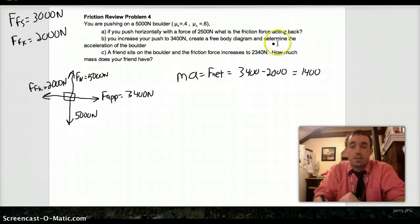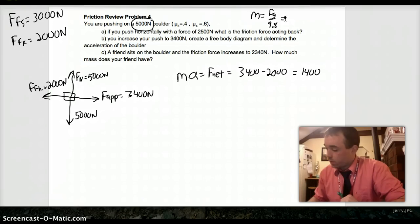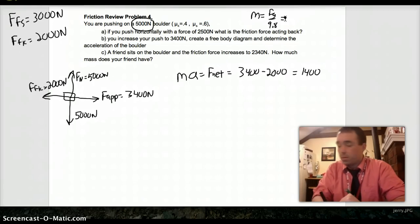That equals mass times acceleration. Our mass, we can find because we know the weight. Mass is weight over 9.8. 5,000 over 9.8 is 510.2.